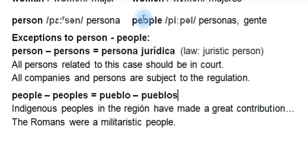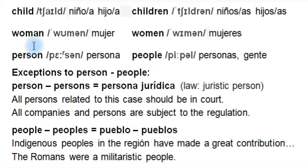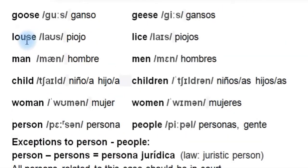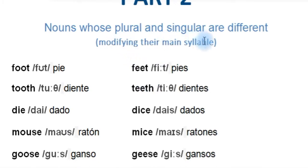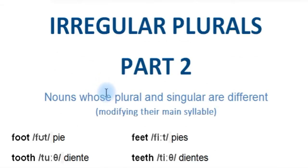So remember: woman, child, man, louse, goose, mouse, die, tooth, and foot — they modify their main syllable and change completely to form the plural. This has been all for the irregular plurals, part two. Practice — remember that when you practice, you make it perfect. Thanks very much. See you in the next video.